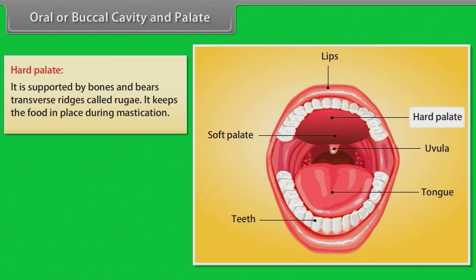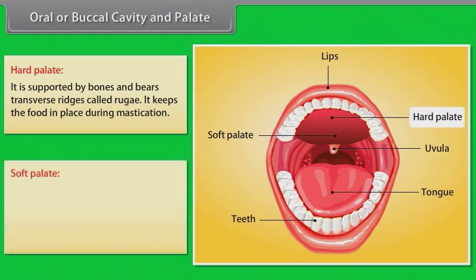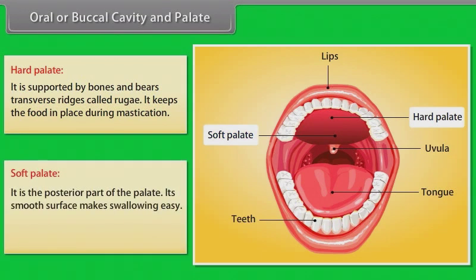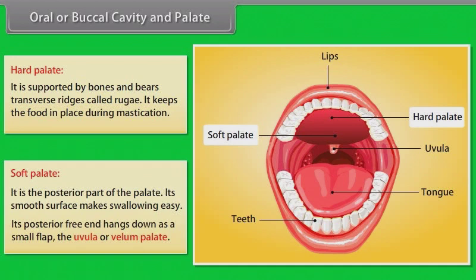The hard palate keeps food in place during mastication. The soft palate is the posterior part of the palate; its smooth surface makes swallowing easy. Its posterior free end hangs down as a small flap called the uvula or velum palate.